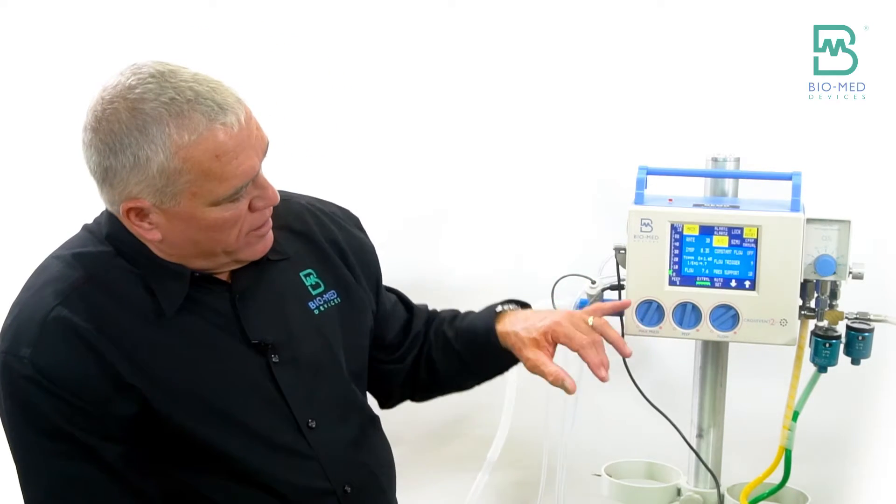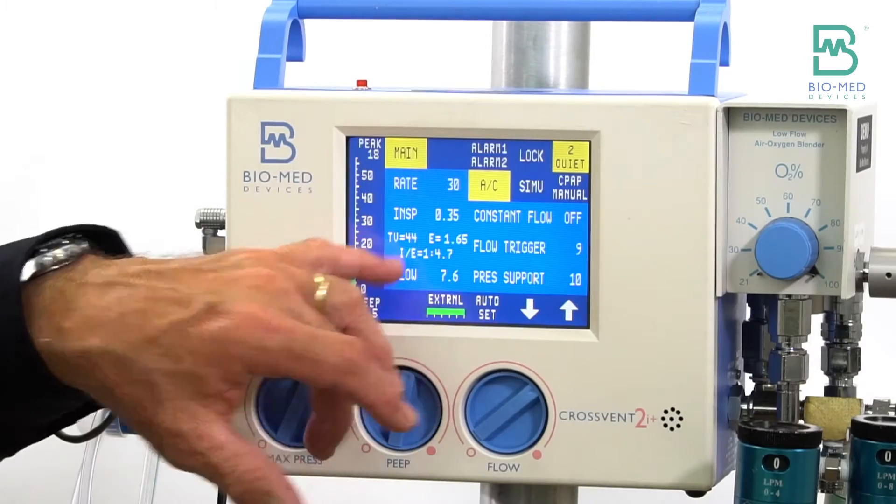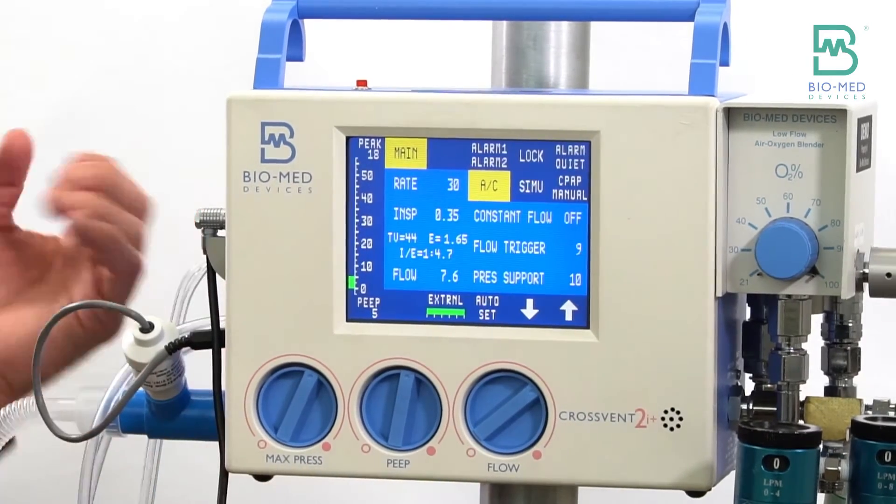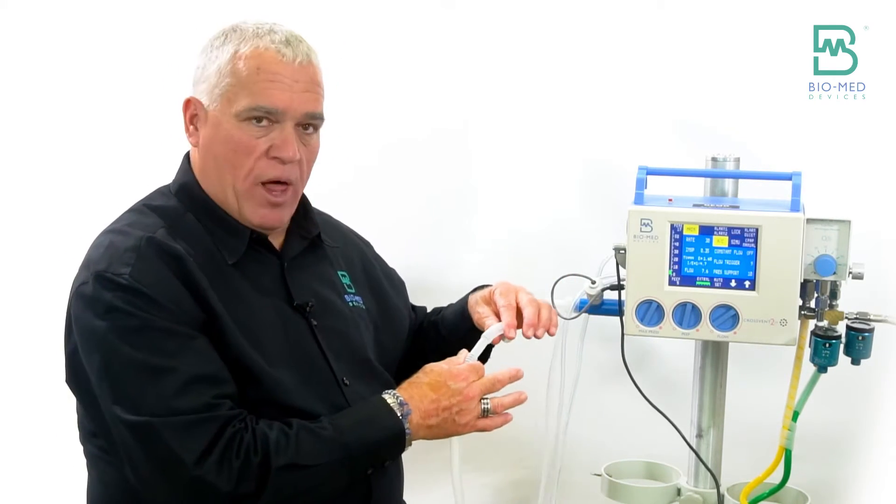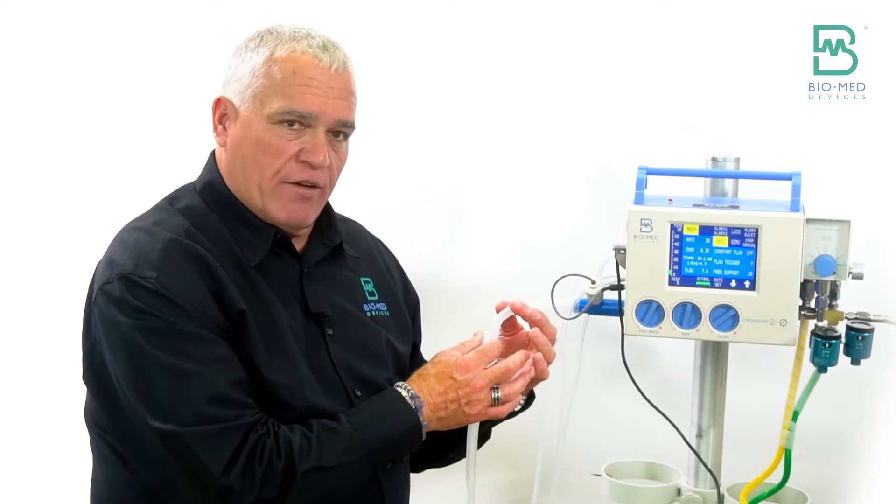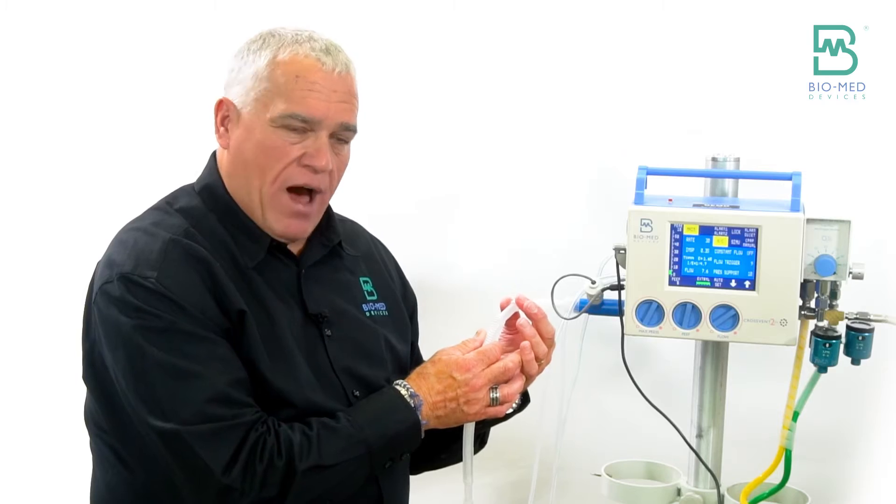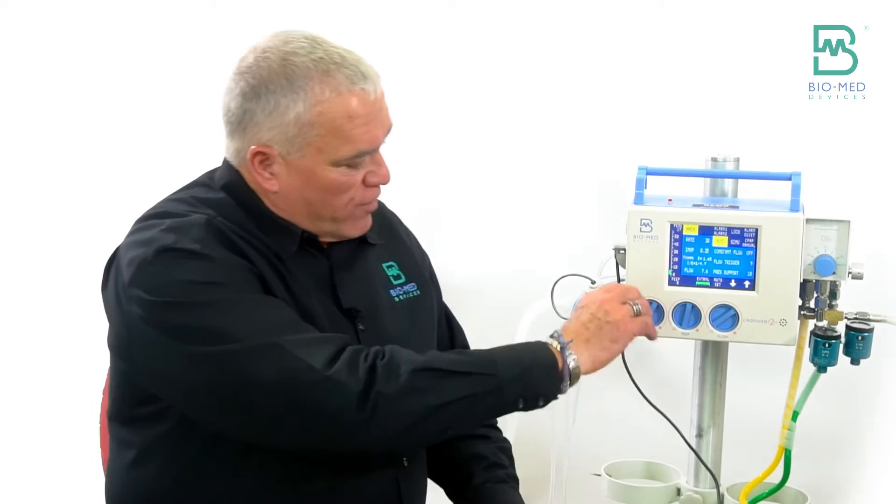So this 44 here is the total number leaving the vent, so what I have to take away from that is how much volume I'm gonna lose in the circuit compliance. Well, our circuit has a compliance factor of about 0.5.